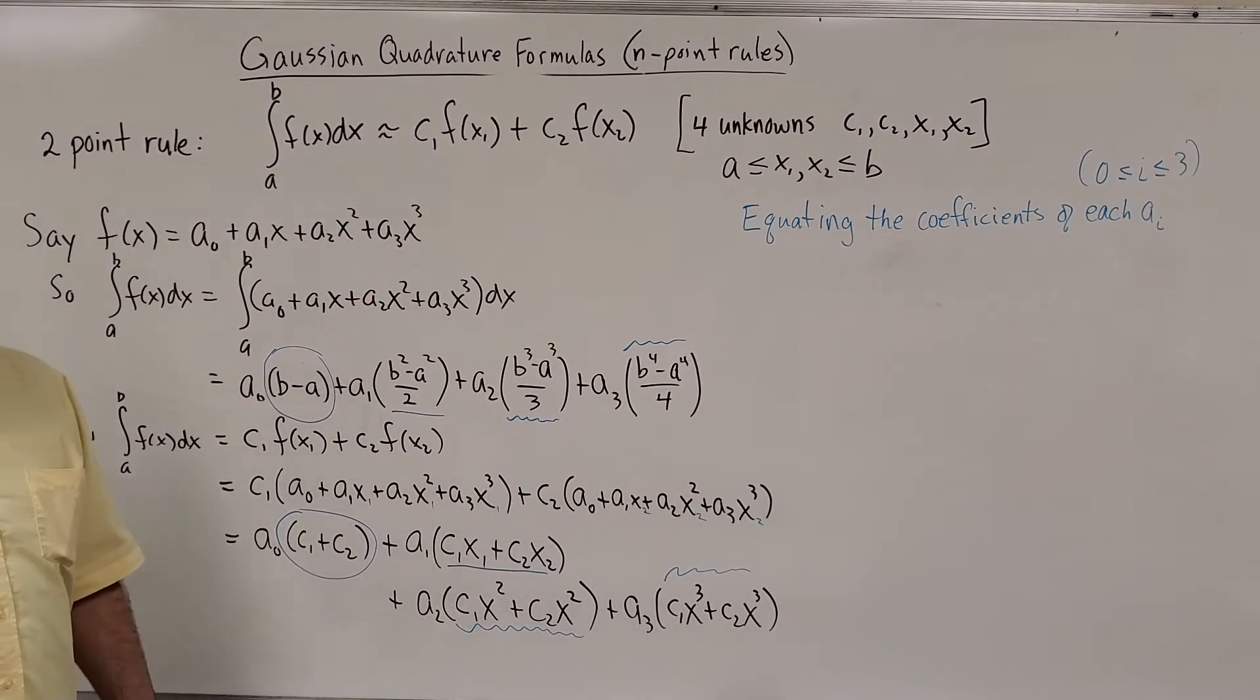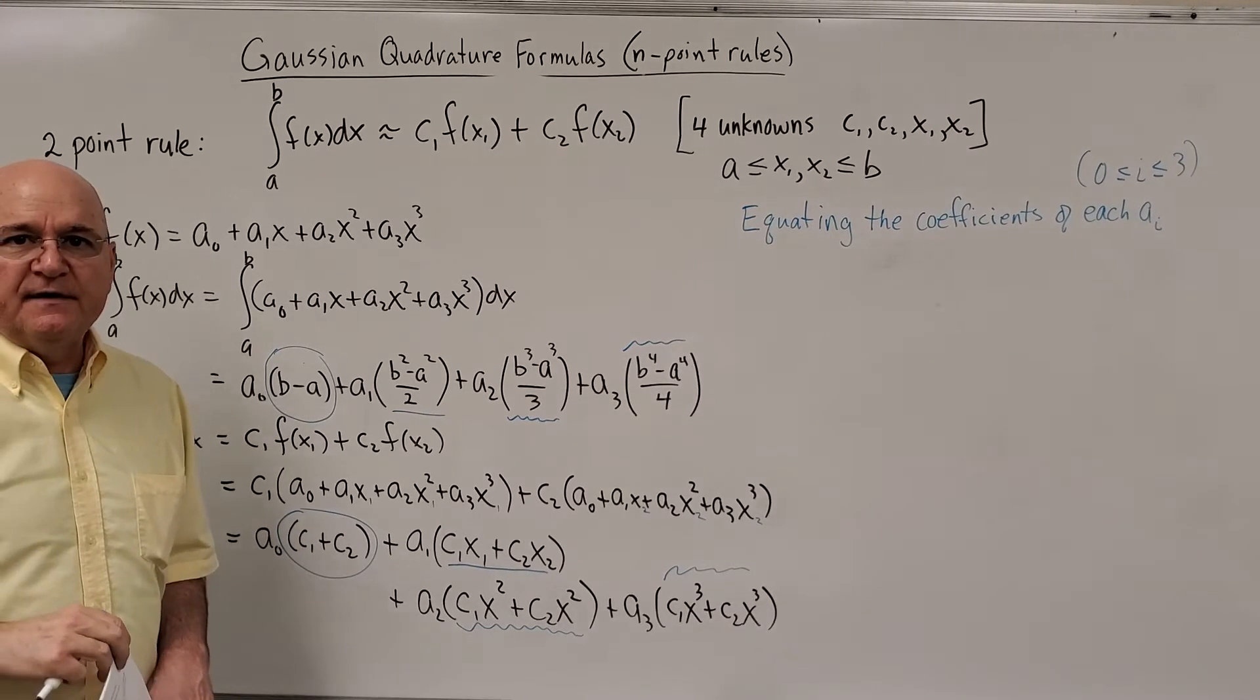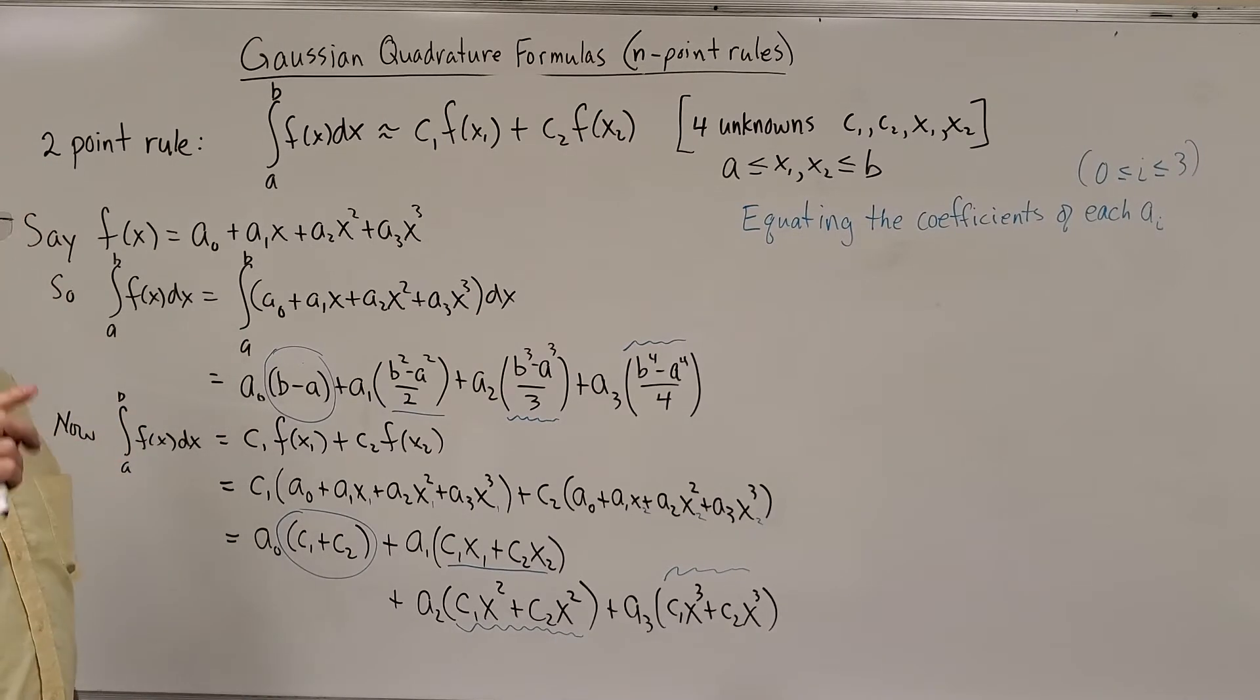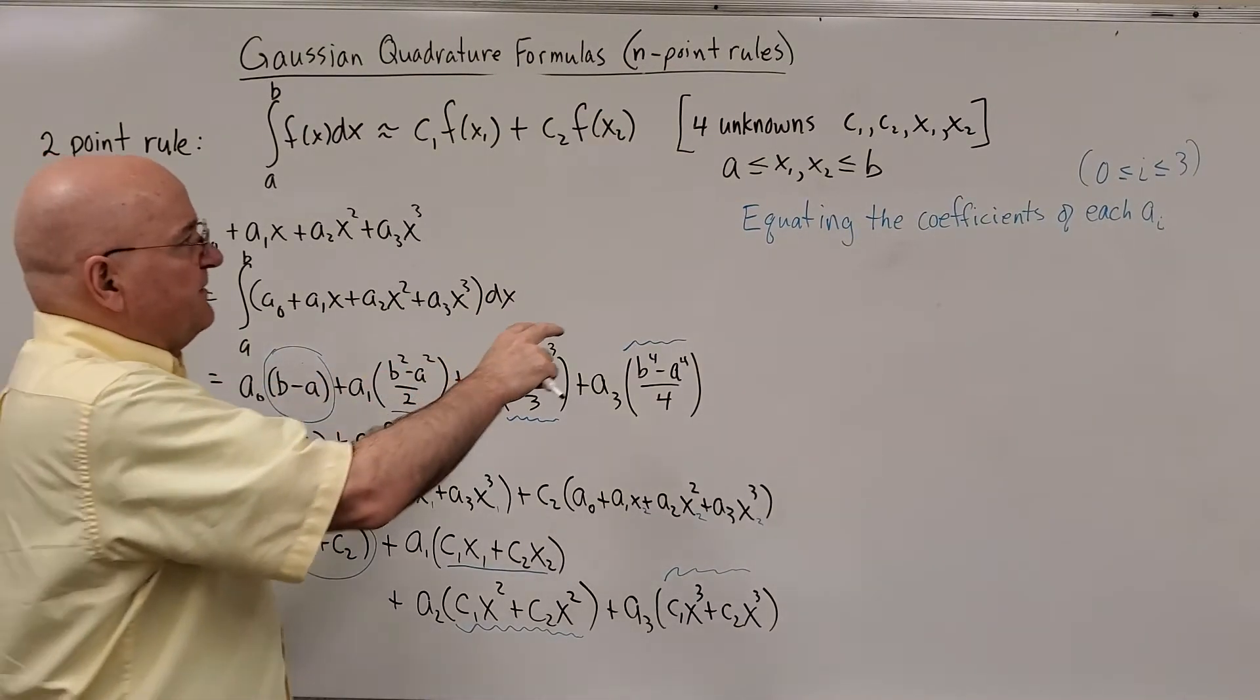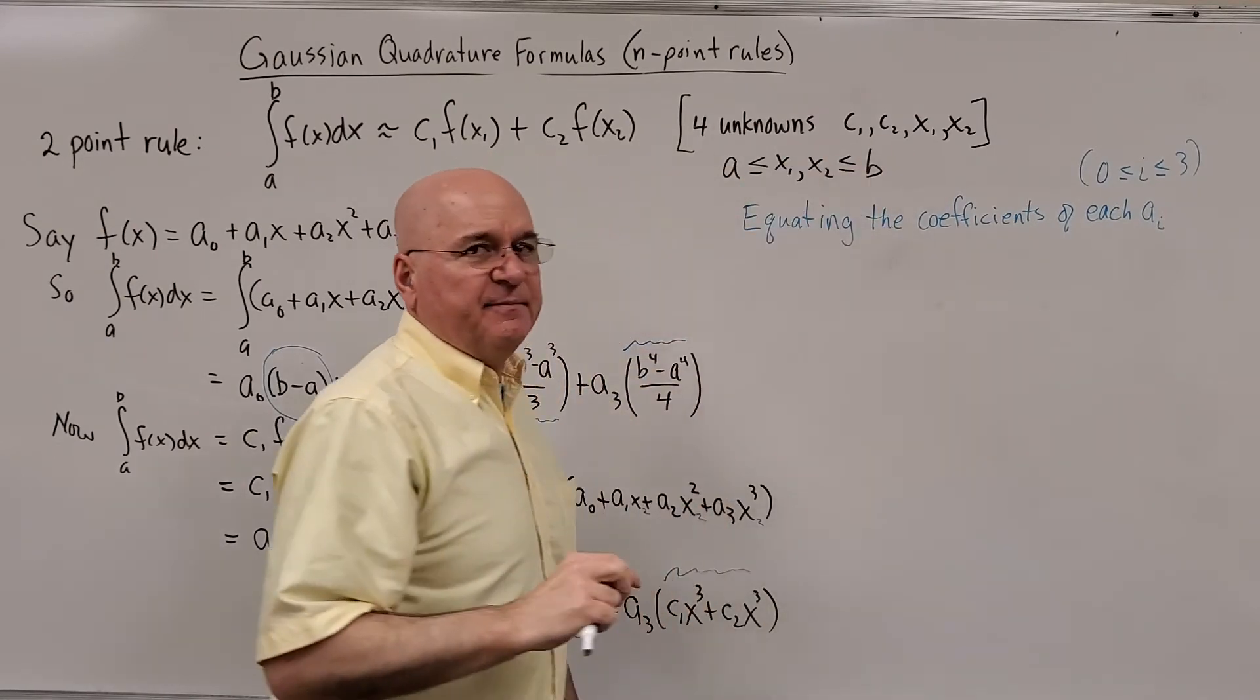You would set C1 X1 cubed plus C2 X2 cubed equal to this. You get four equations. And when you solve them, you might get multiple solutions. But choose any appropriate one. Basically, what I'm saying is, if a solution comes up with X1 or X2 being outside of A, B, throw it away.